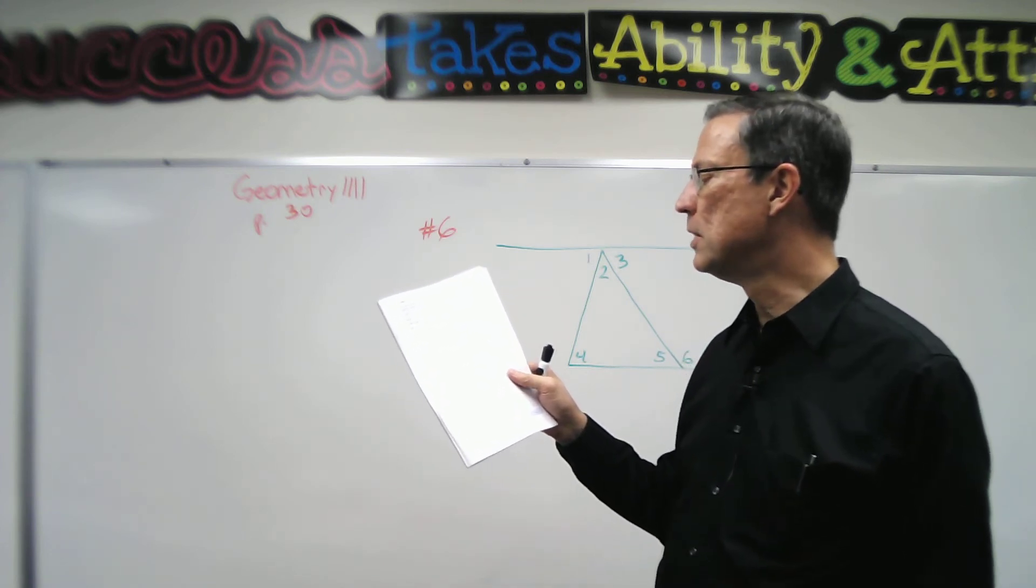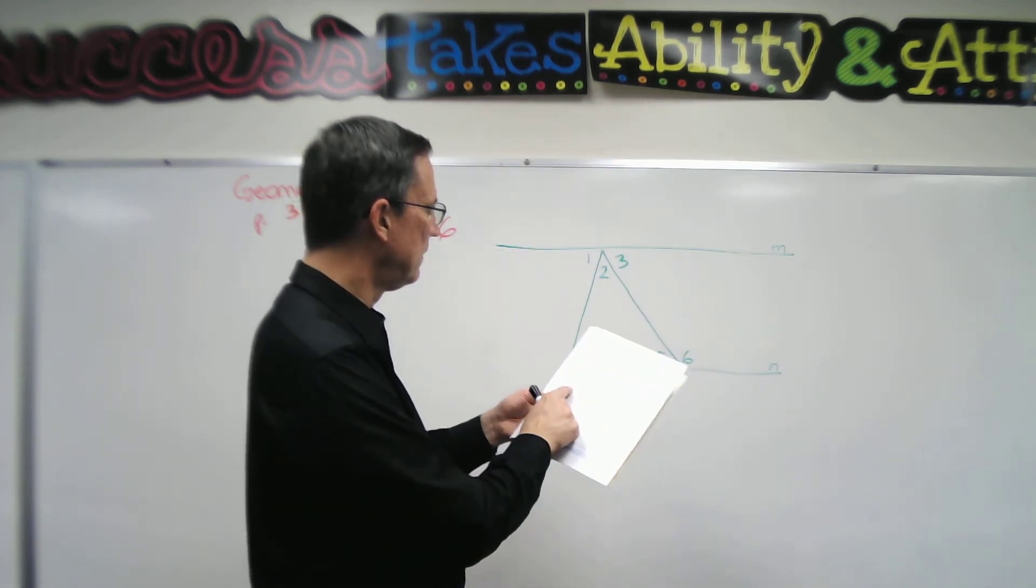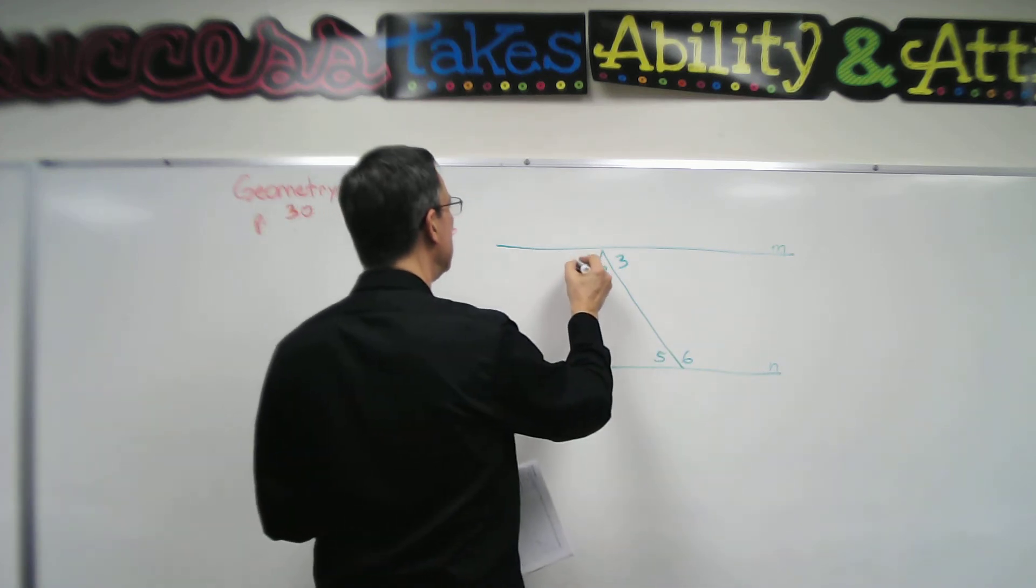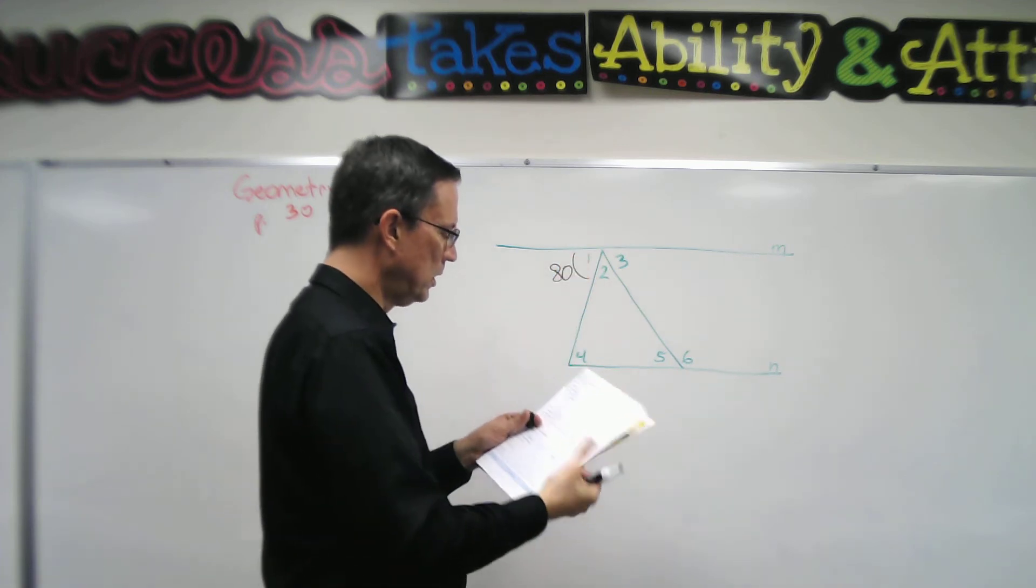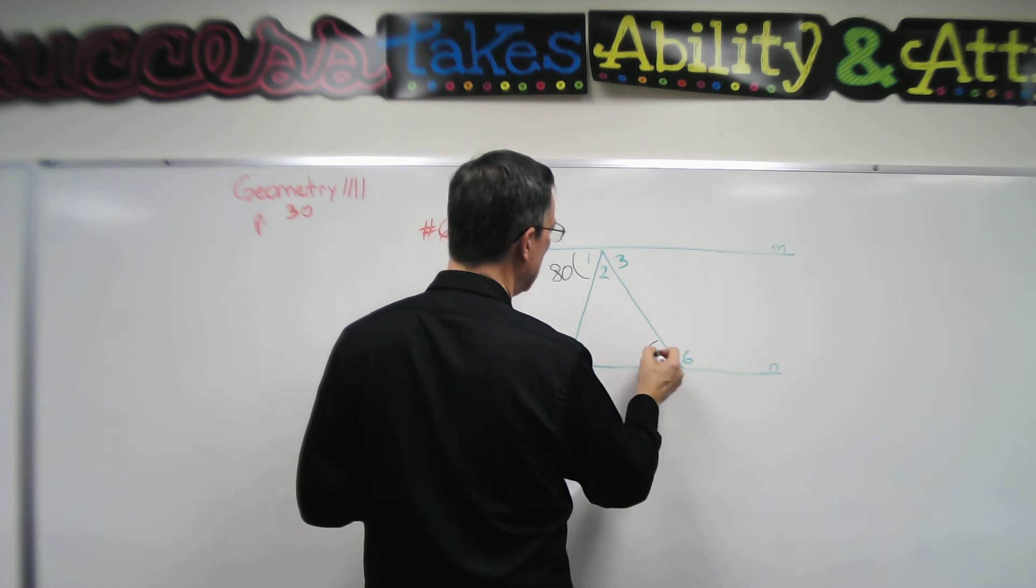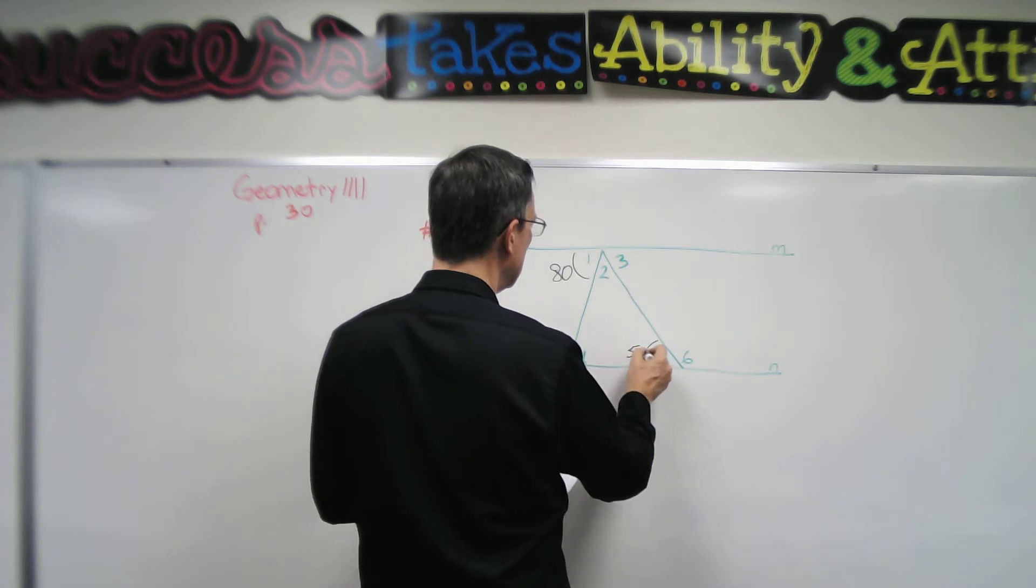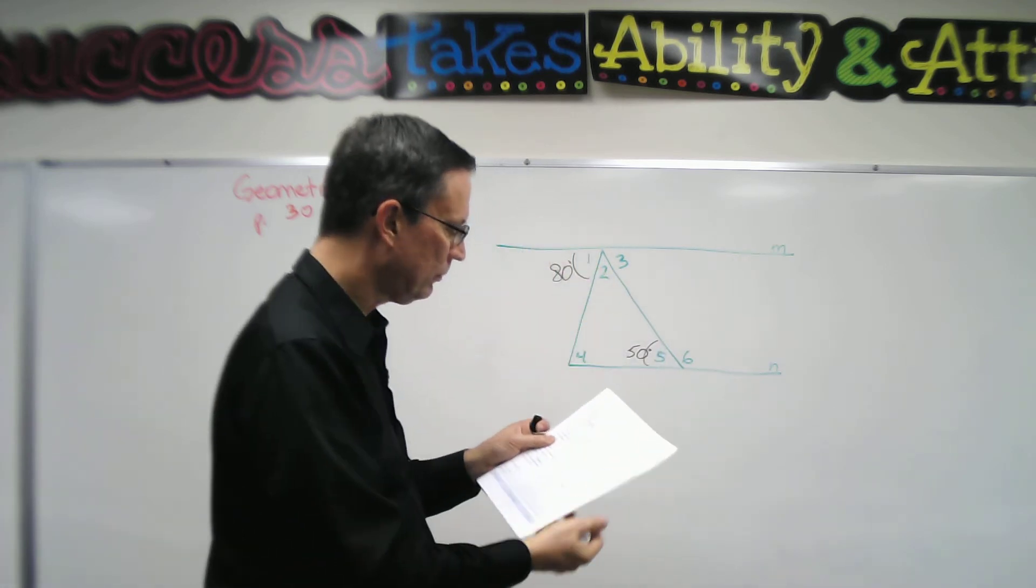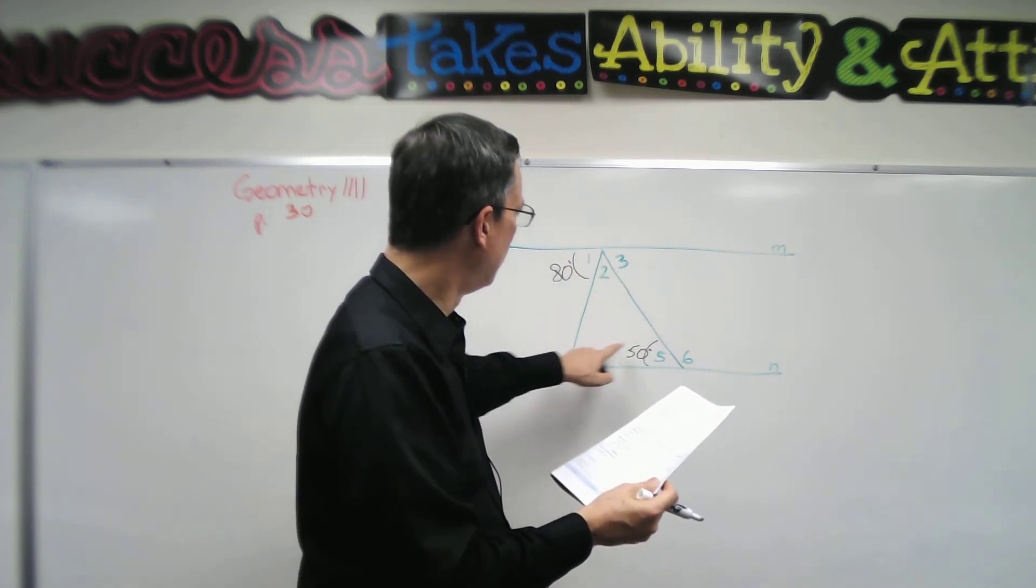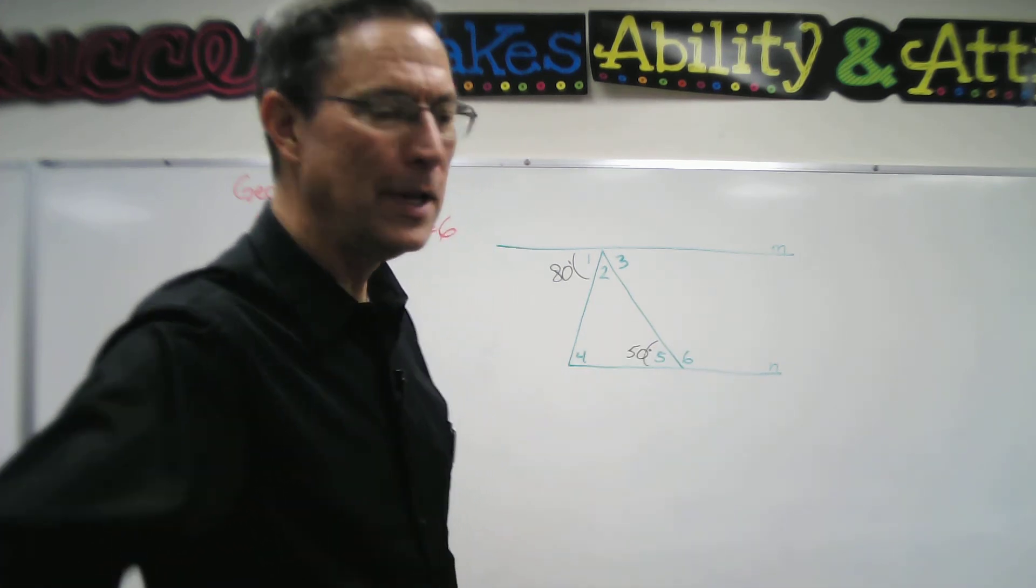Okay, on number six they tell us that these two lines are parallel, and then they give us the value of angle one. So measure of angle one right here is 80 degrees. Let's mark that. They tell us that this angle in here, measure of angle five, is 50 degrees. And then we are asked to find measure of angles two, three, four, and six.